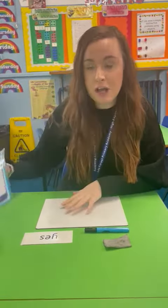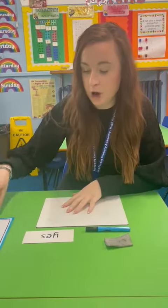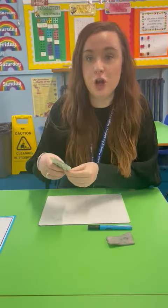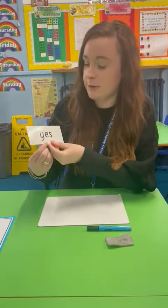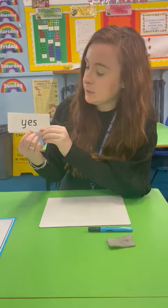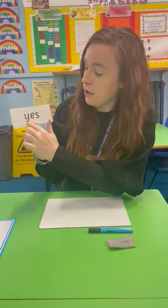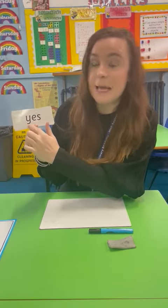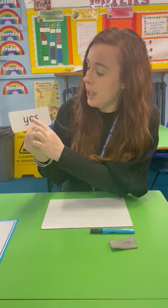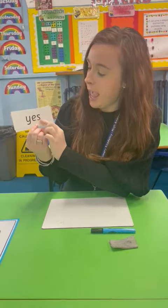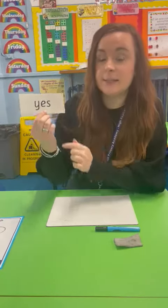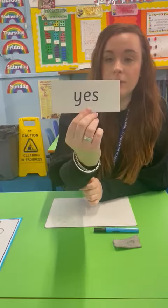So first of all we're going to have a go reading some words that have the Y sound in them. I can see in this word that the Y phoneme is at the beginning. So we've got Y, E, S — yes. You have a go.